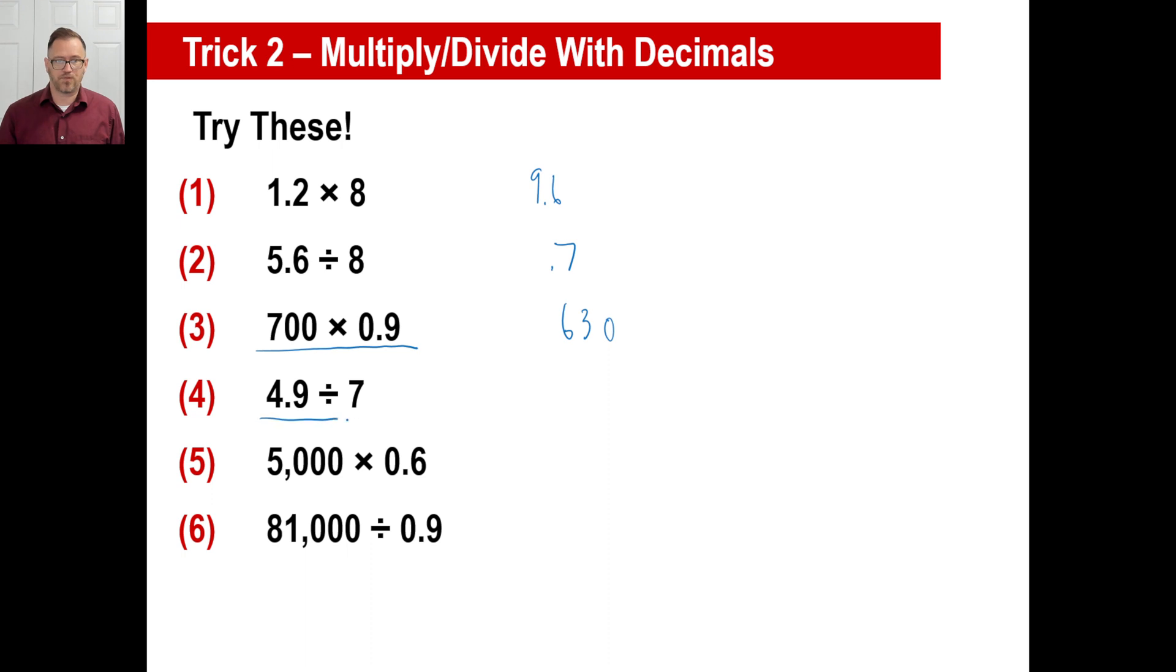This one is about 5 divided by 7, which is about 1, a little less than 1. 49 divided by 7 is 7. Well, that's not about 1. So it'll be 0.7. Last two. 5,000 times 0.6 is about 5,000 times 1, but a little less than that. Ignore everything except for the 5 and the 6. 5 times 6 is 30. What gives you something close to 5,000-ish? 3,000. And this one? 81,000 divided by 1 is about 81,000. If you ignore this, the problem is 81 divided by 9, which is 9. Well, if it's close to 81,000, it's going to have to be 90,000.